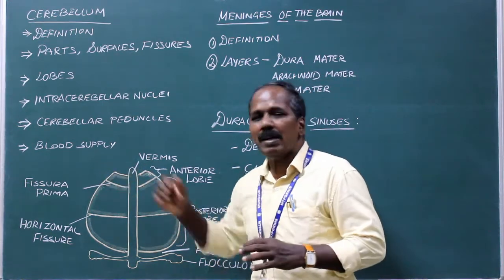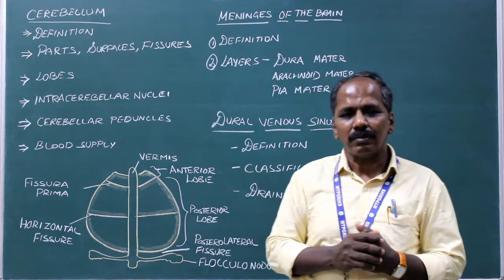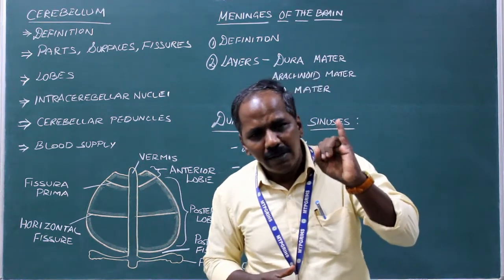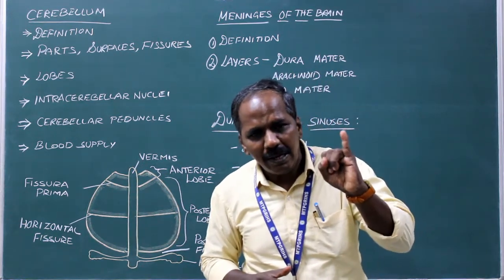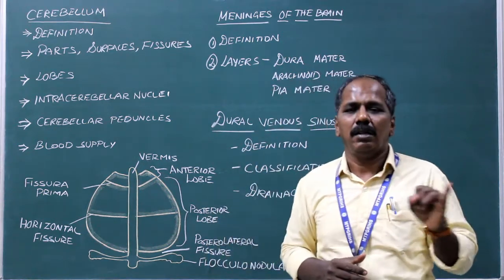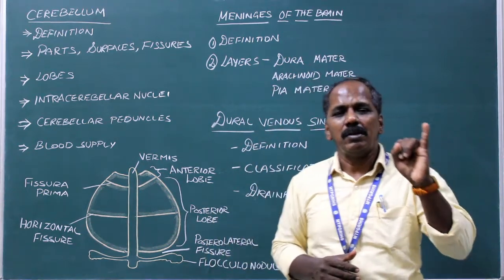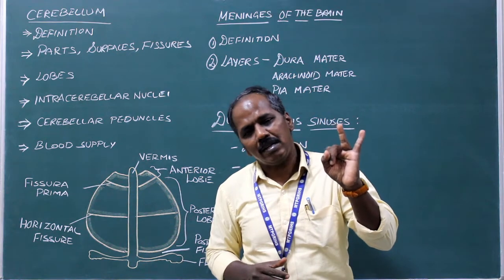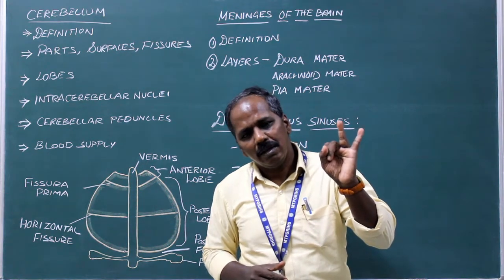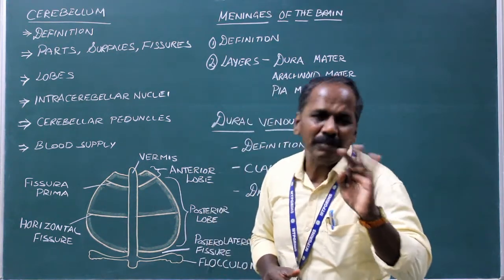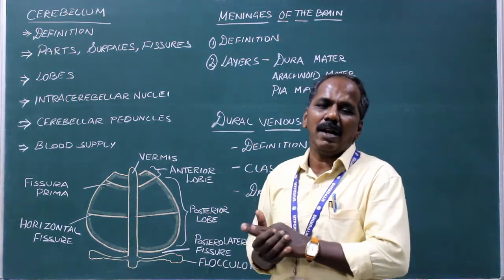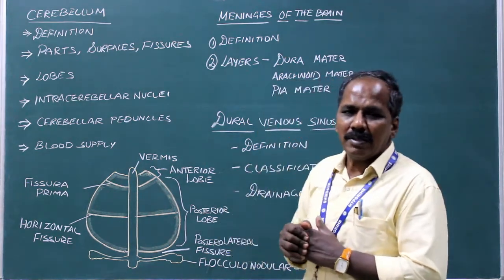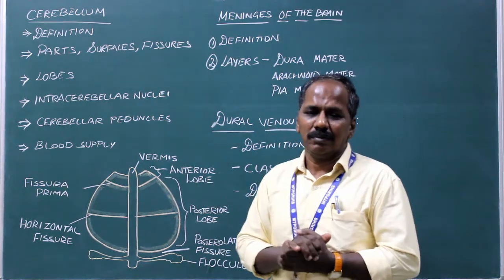Blood supply of the cerebellum. It is supplied by: number one, superior cerebellar artery; number two, anterior inferior cerebellar artery; number three, posterior inferior cerebellar artery. These are the arteries which supply the cerebellum.